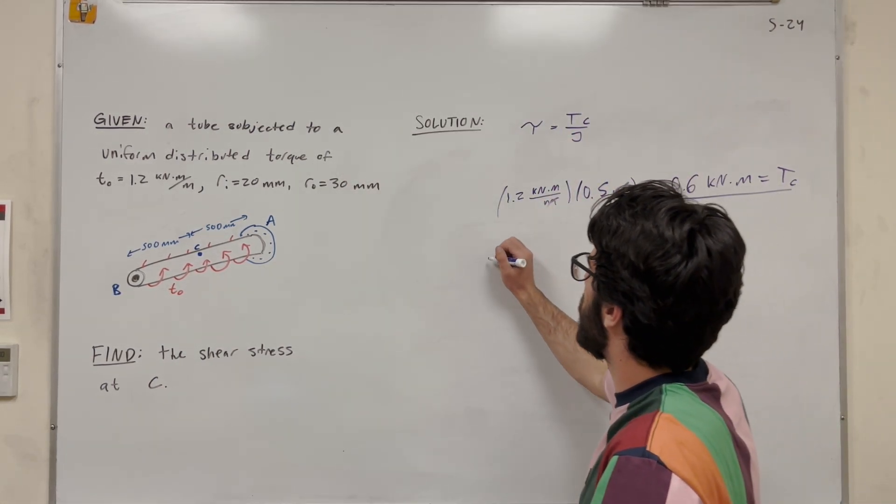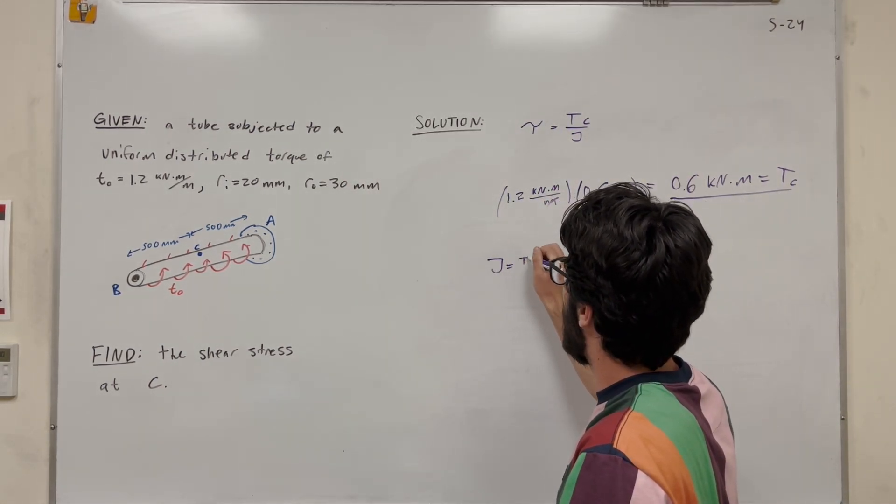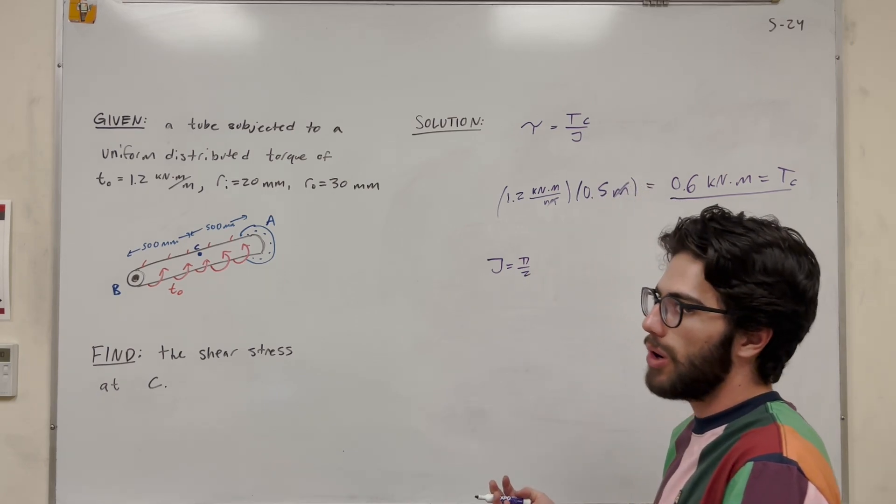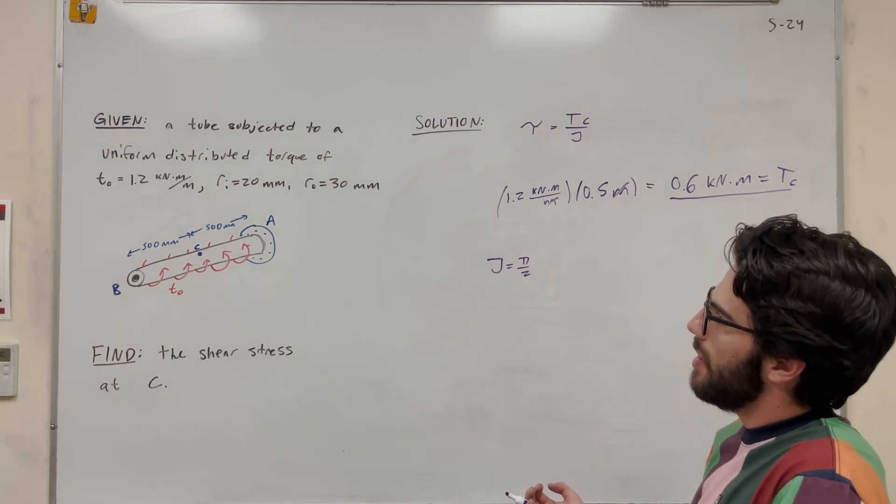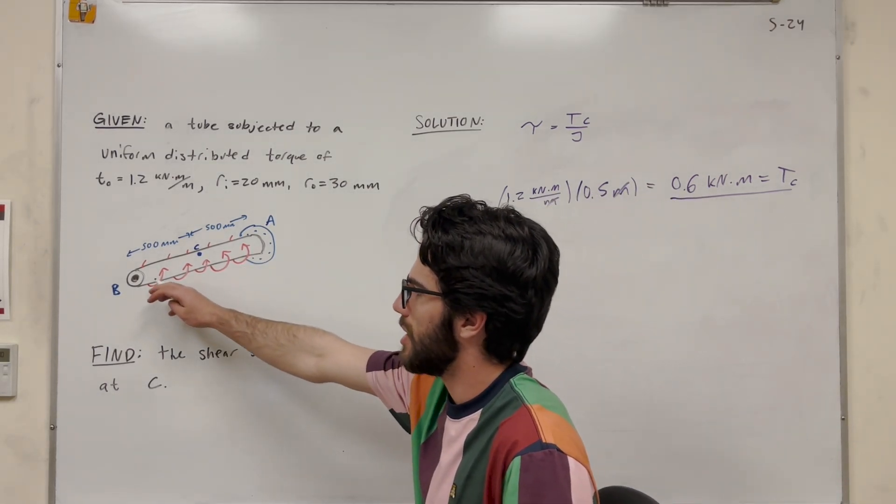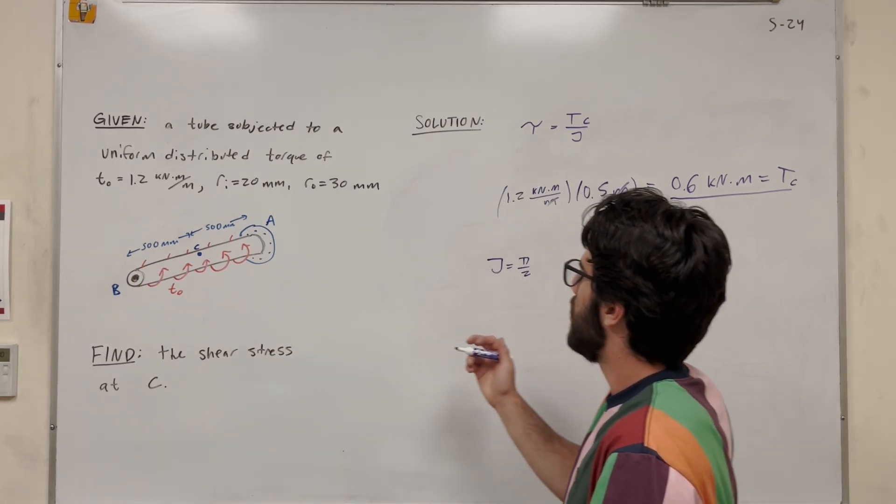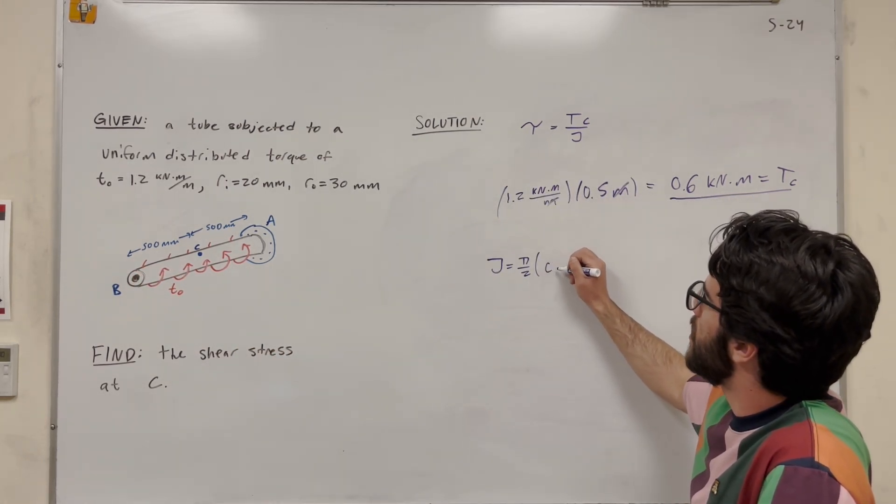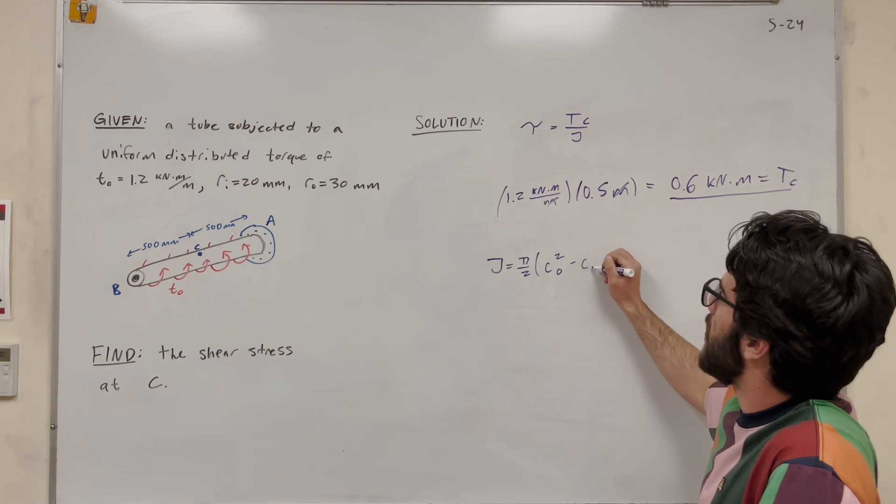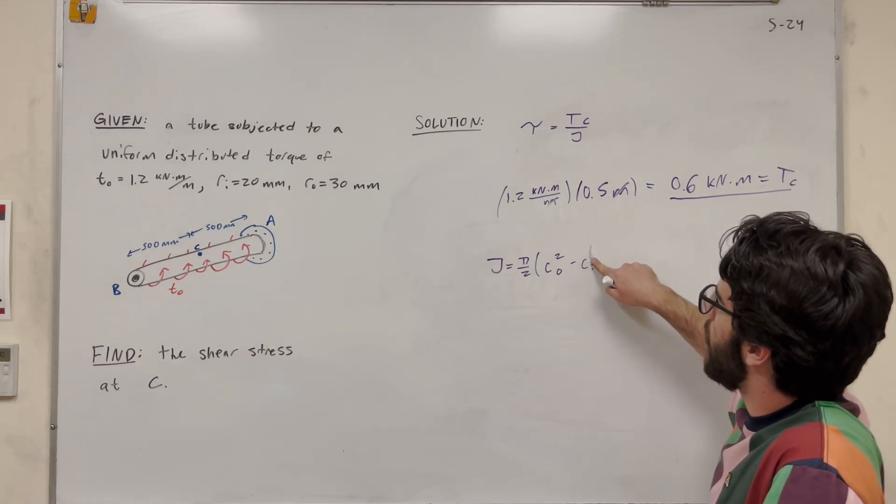All right, so the equation for polar moment of inertia is going to be pi over 2 radius to the 4th. That being said, when we have a tube, we need to get rid of that area on the inside. So the equation for a tube becomes radius outer minus radius inner, or not squared, to the 4th.